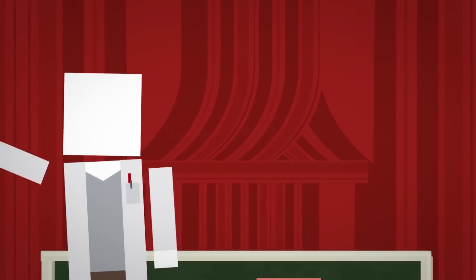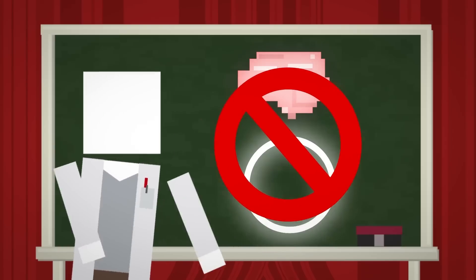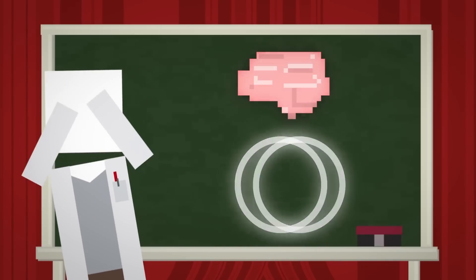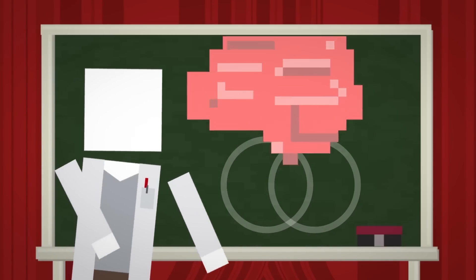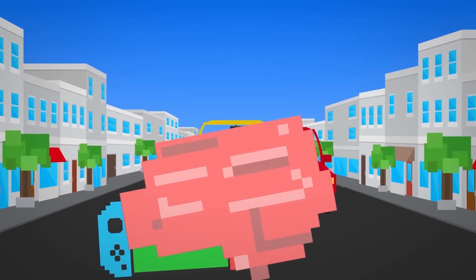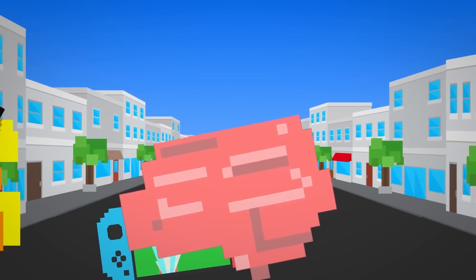In reality, your brain is not illuminating that circle. It is actively suppressing the two circles you are not focusing on. This can lead to your brain outright ignoring objects or people in your line of sight.